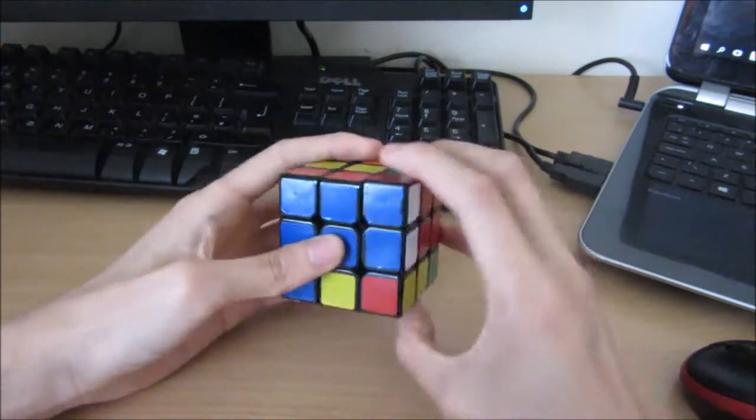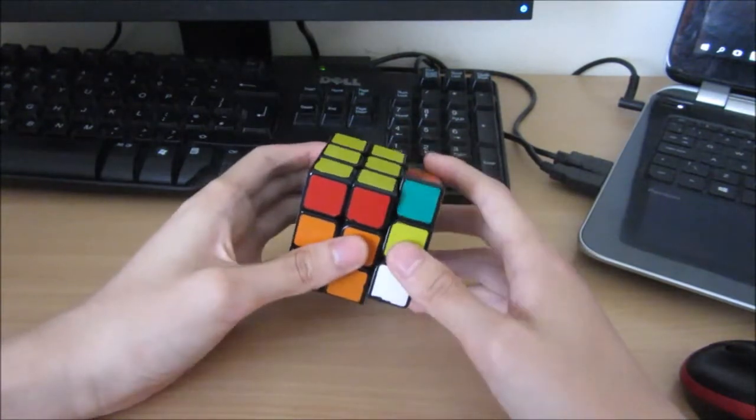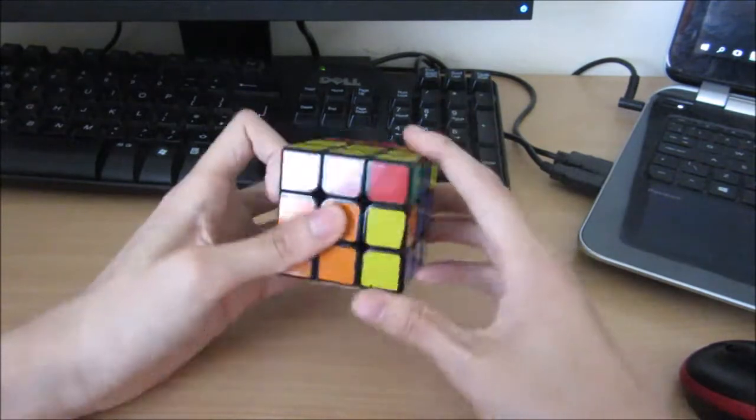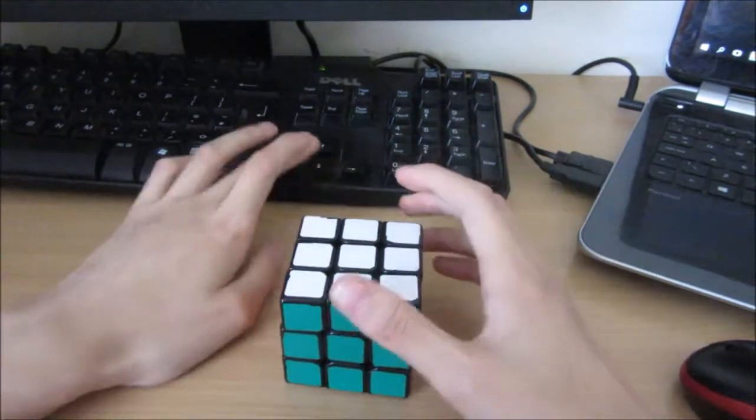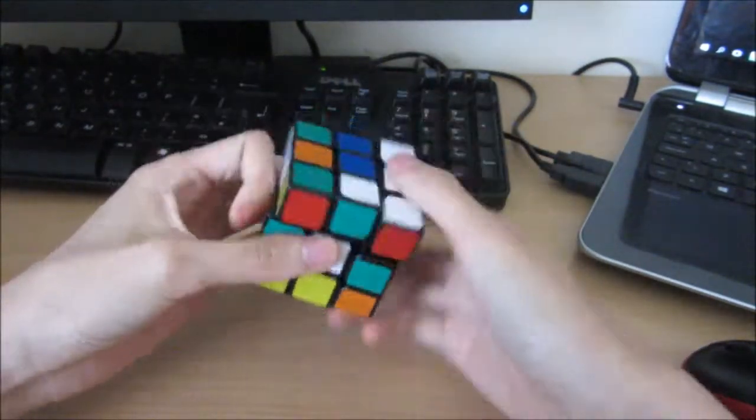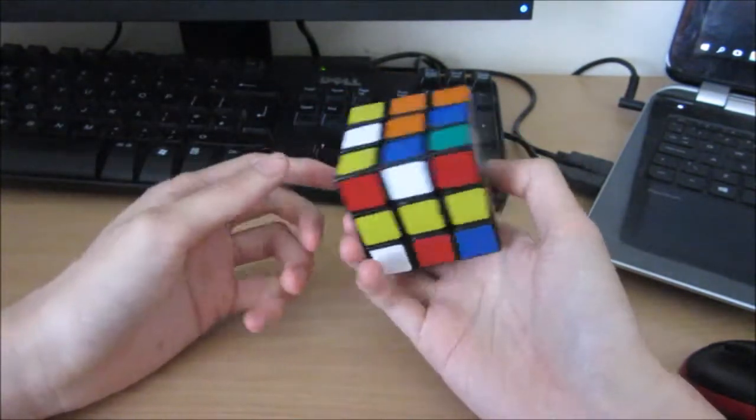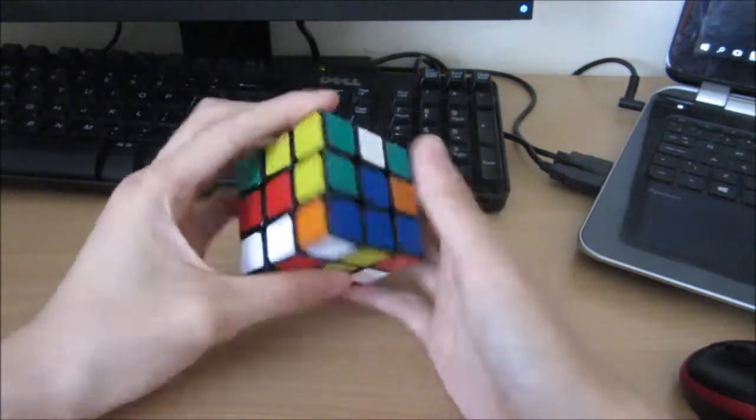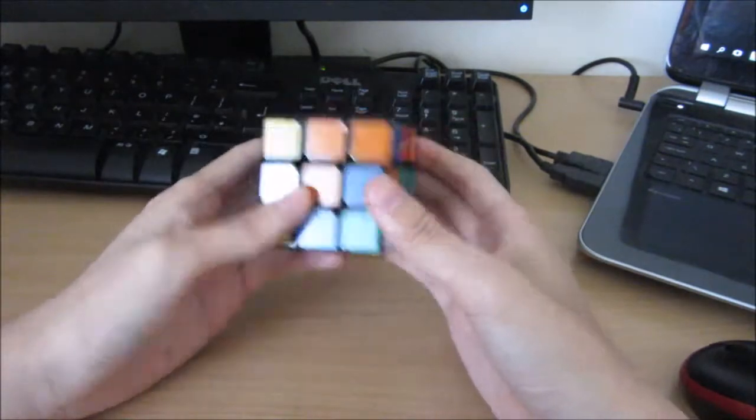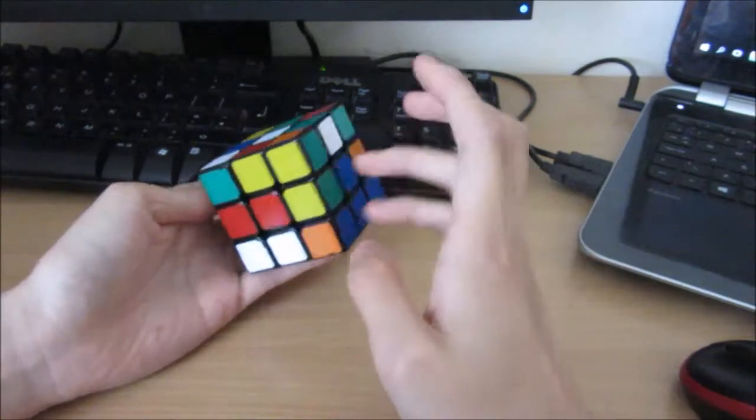So these are my four bad edges, and I would solve it like this. By chance, I get a block made. So just put it down. And I think I'm going to skip OLL. And I get an F-perm.